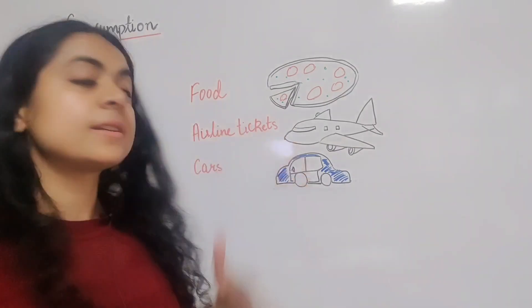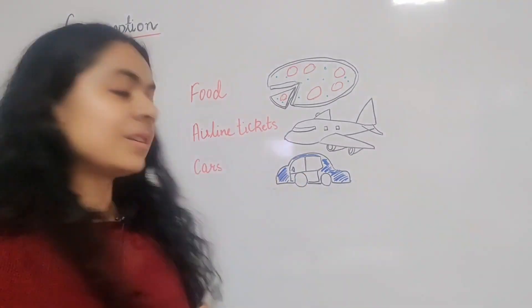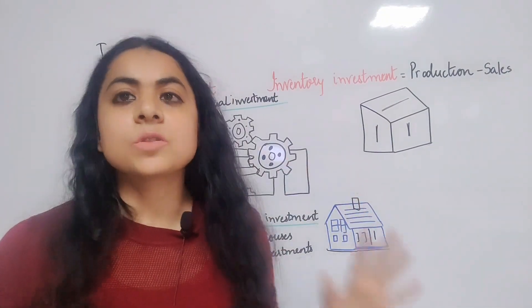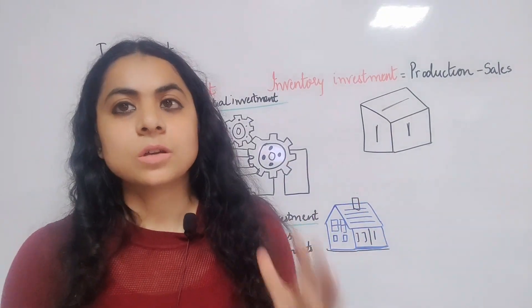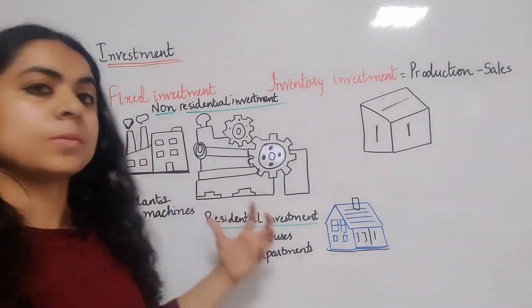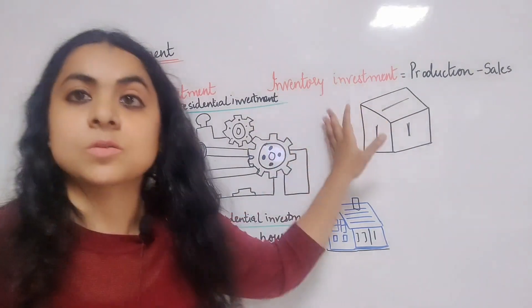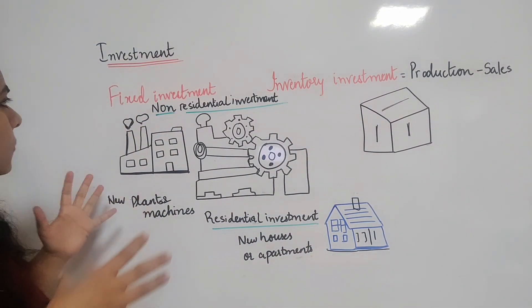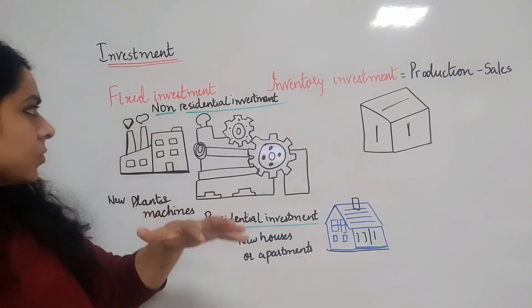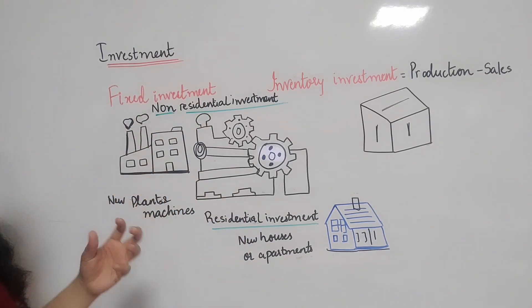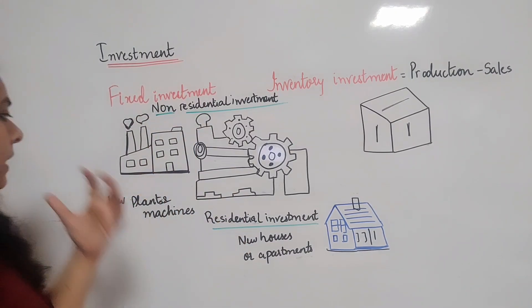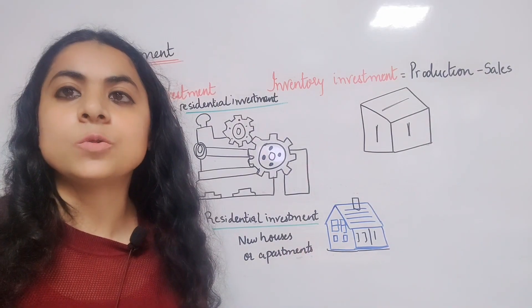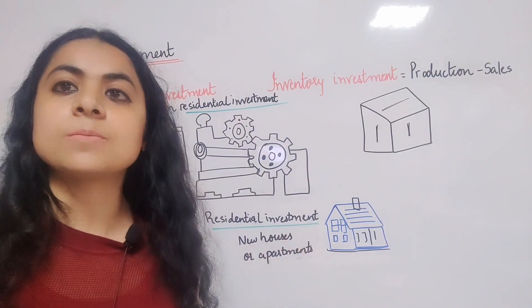Next comes investment, which includes fixed investment and inventory investment. Fixed investment includes non-residential investment — that means purchase of plant and machines by firms. It also includes purchase by people of new houses.